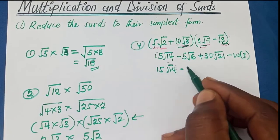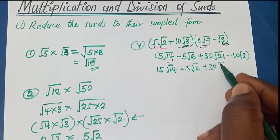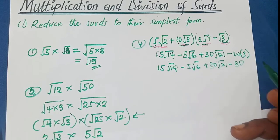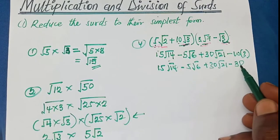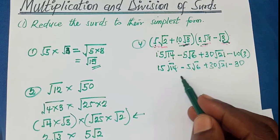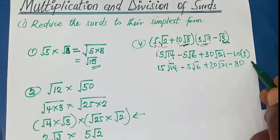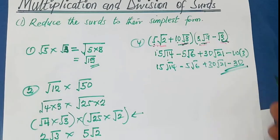We check whether we can simplify. There are no like terms, so there's no way to add or subtract them. This is our final answer.